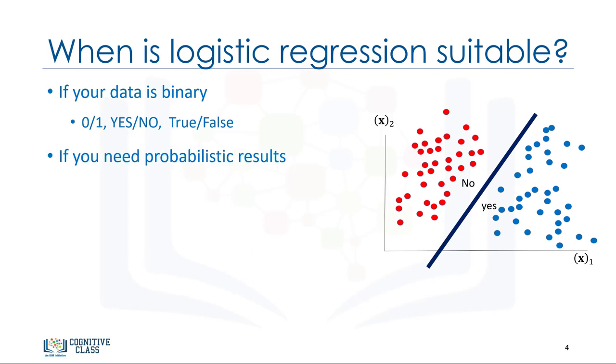Second, you need the probability of your prediction. For example, if you want to know what the probability is of a customer buying a product. Logistic regression returns a probability score between 0 and 1 for a given sample of data. In fact, logistic regression predicts the probability of that sample, and we map the cases to a discrete class based on that probability.